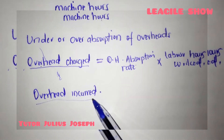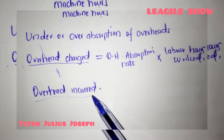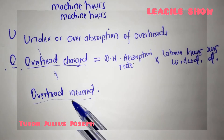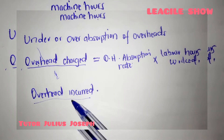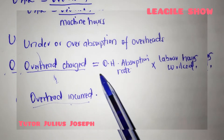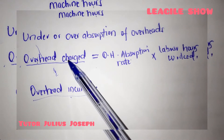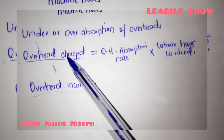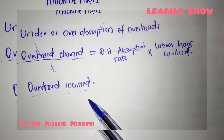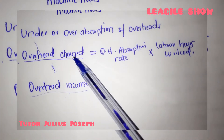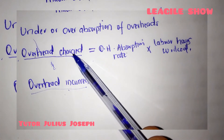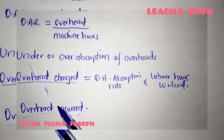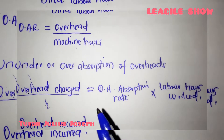When the overhead incurred is lower than the overhead charged, that is an over absorption. When the overhead incurred is higher than the overhead charged, that is an under absorption.